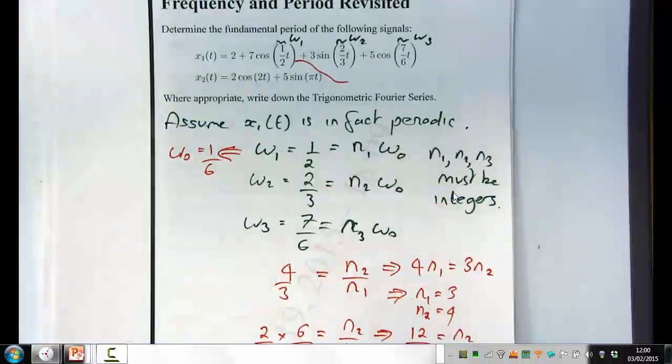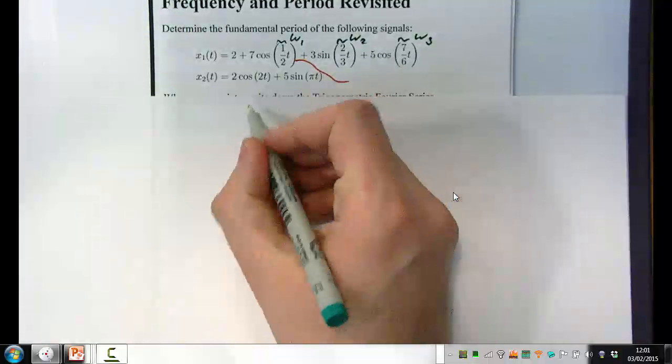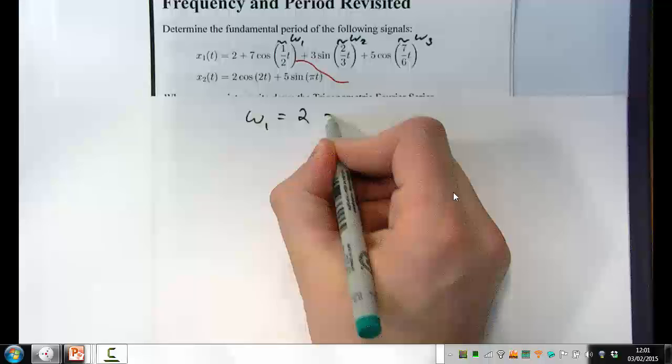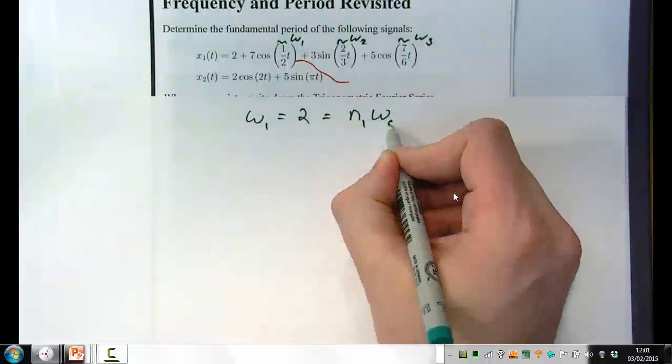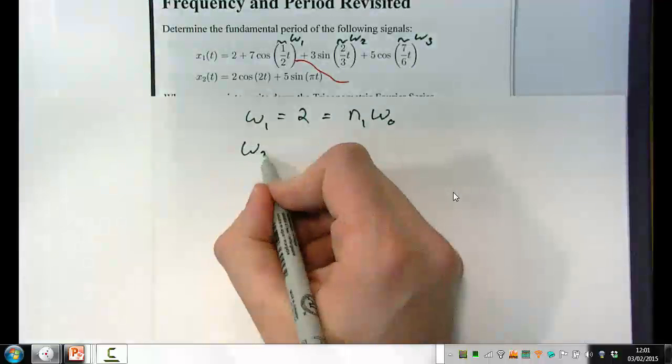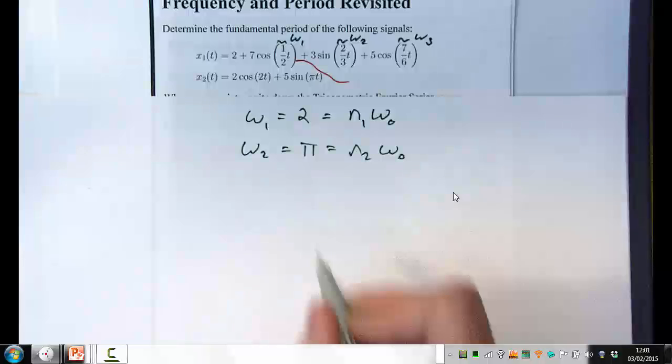So, in x2, cos 2t is periodic, with the fundamental frequency of 2. Whereas the second frequency is sine pi t, is periodic with frequency pi. But if you try to find a common divisor between those two. So if you wrote this as omega 1 is 2, is n times, or n1 times omega 0. And omega 2 is pi, is n2 times omega 0. If you take the ratio of those, then you've got, for example, pi over 2 is n2 over 1.